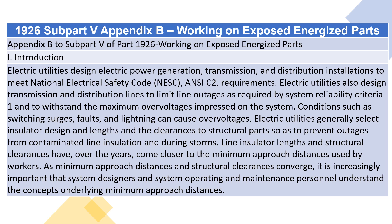Lines must withstand the maximum overvoltages impressed on the system. Conditions such as switching surges, faults, and lightning can cause overvoltages. Electric utilities generally select insulator design and lengths and the clearances to structural parts to prevent outages from contaminated line insulation and during storms. Over the years, line insulator lengths and structural clearances have come closer to the minimum approach distances used by workers. As minimum approach distances and structural clearances converge, it is increasingly important that system designers and operating and maintenance personnel understand the concepts underlying minimum approach distances.